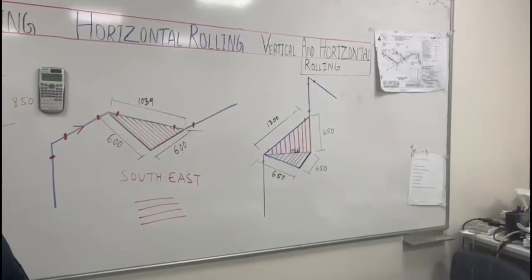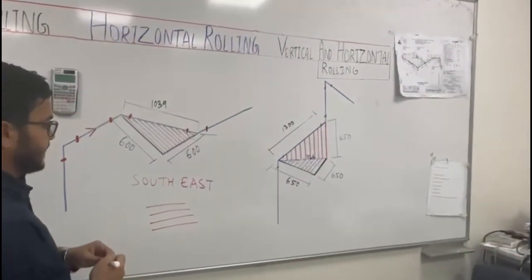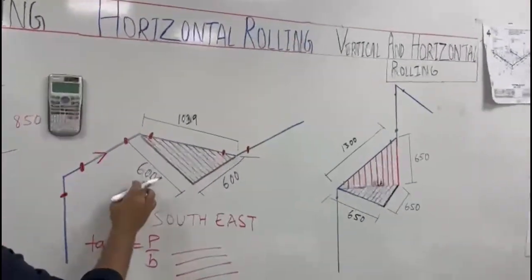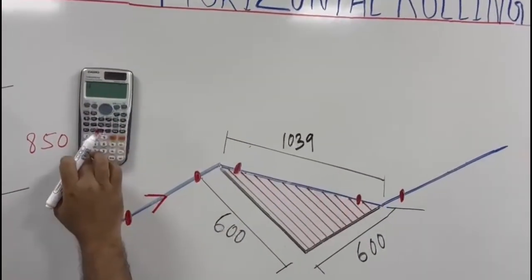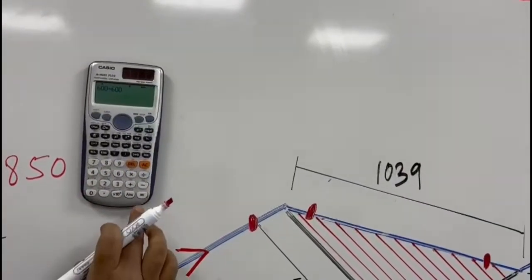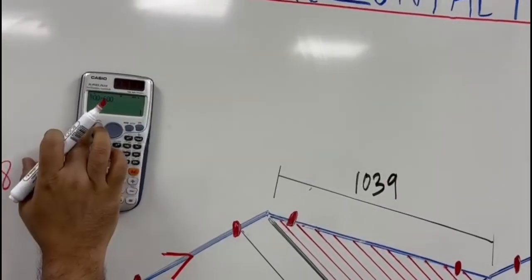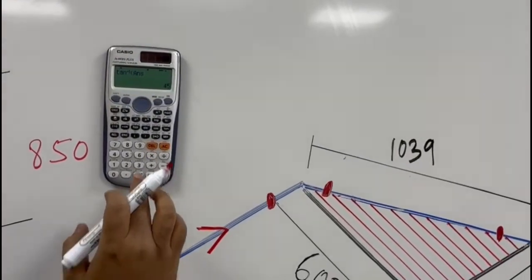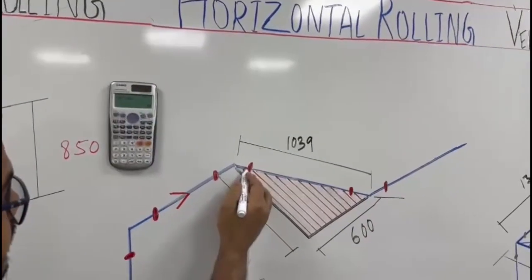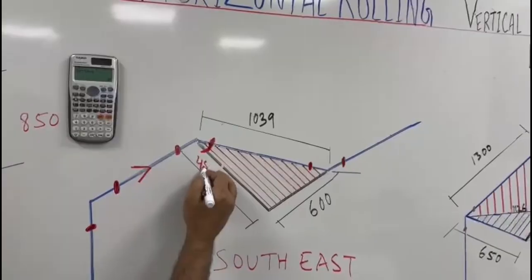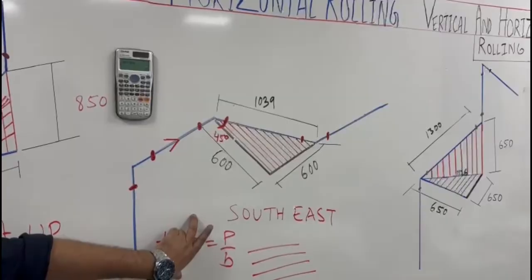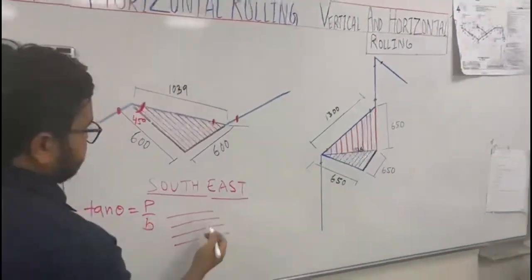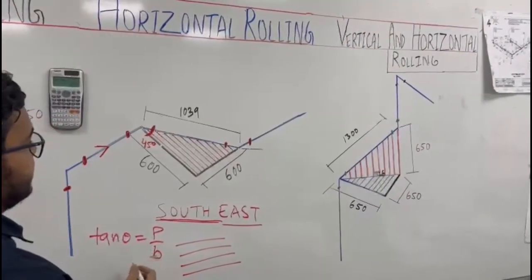Now how do you calculate this? The formula is tan theta = P/B. Here we have 600, so 600 divided by 600, we get 1. Shift tan gives the answer 45 degrees elbow. So the rolling is 45 degrees, south to east — a 45 degree elbow.